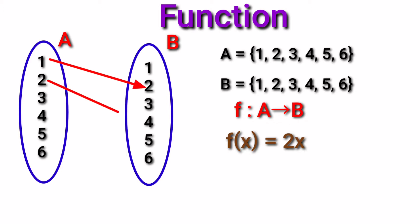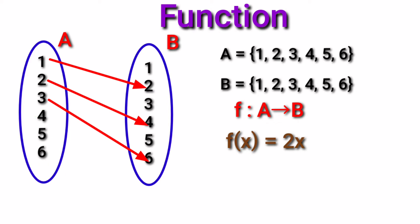1 times 2 is 2, 2 twos are 4, 3 twos are 6, 4 twos are 8, 5 twos are 10, 6 twos are 12. The values 8, 10, 12 are not in B, so we can't find the answers for 4, 5, 6 in B. Hence, we can say that this is not a function.